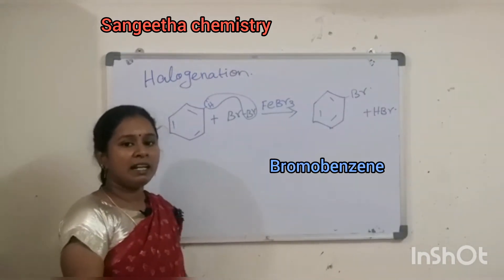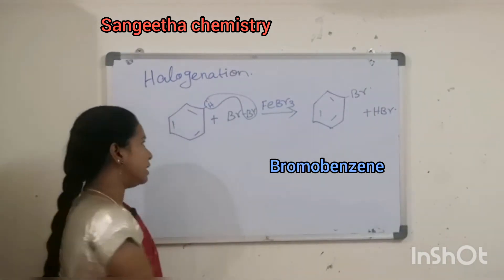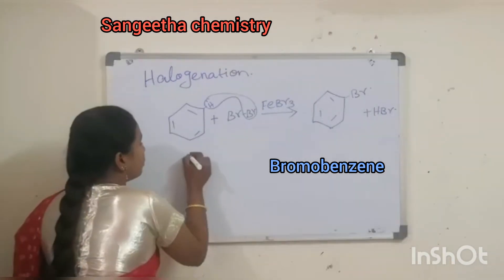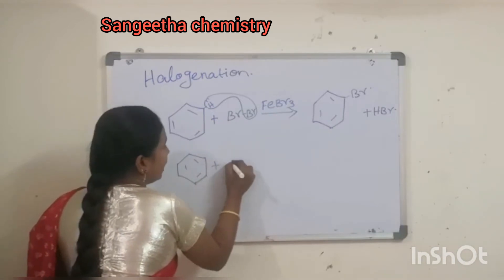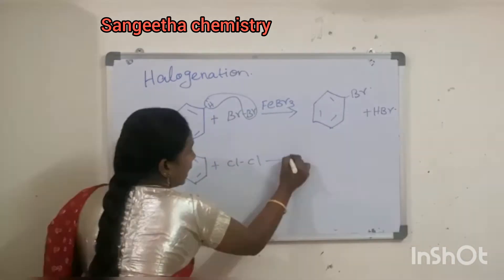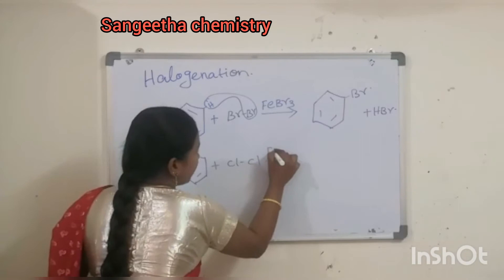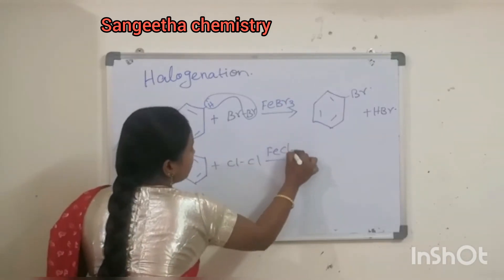Bromobenzene. We are getting Bromobenzene. Same, Chlorine. Benzene, Chlorine. Cl. But if you use the catalyst, it is FeCl3.